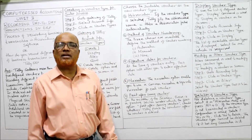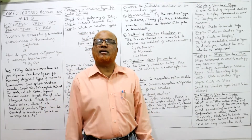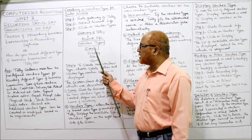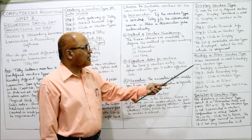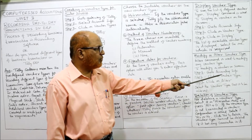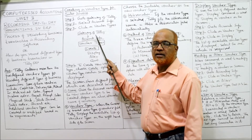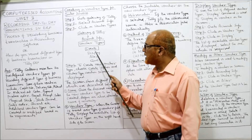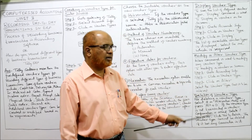To modify or alter a voucher type, use the Alter option. From Gateway of Tally, select Account Info, select Voucher Type, then select Alter. The alter command is used to modify any existing voucher type. Select the voucher type that is to be altered and make the required changes.